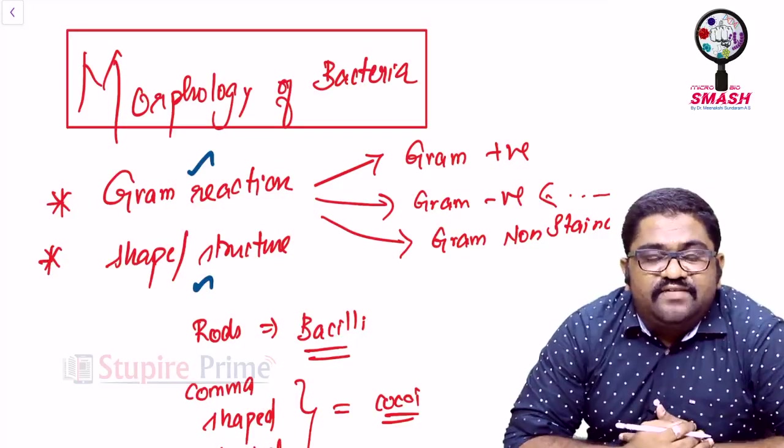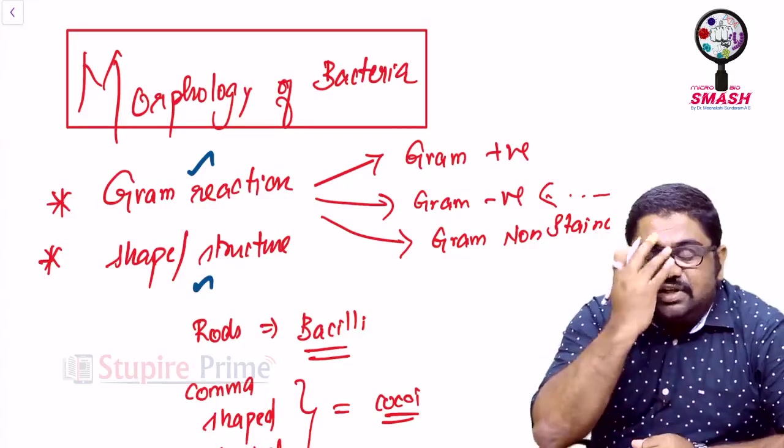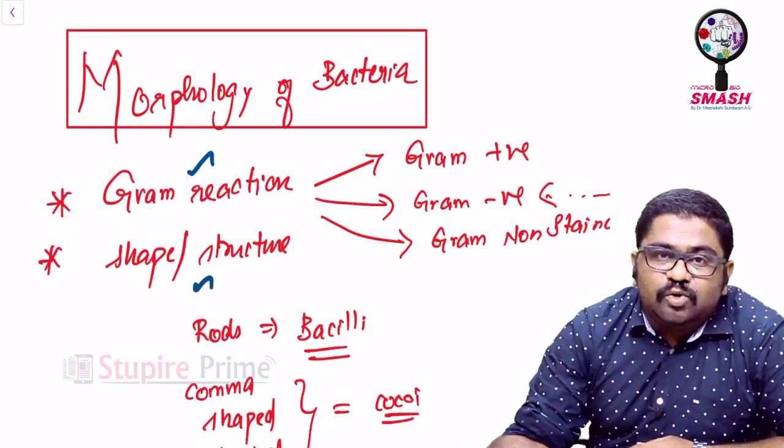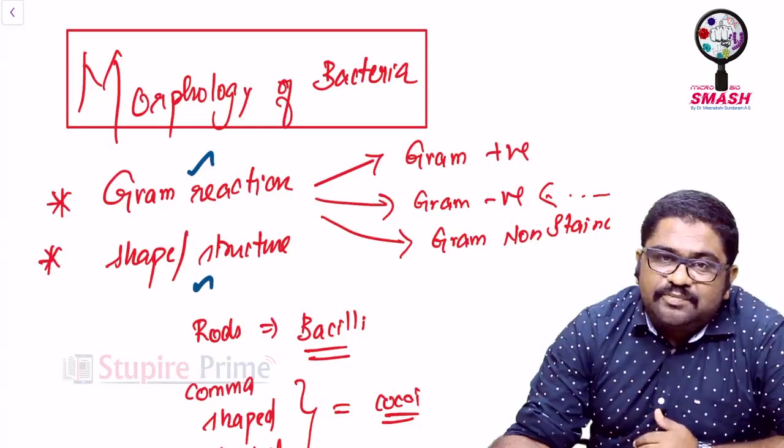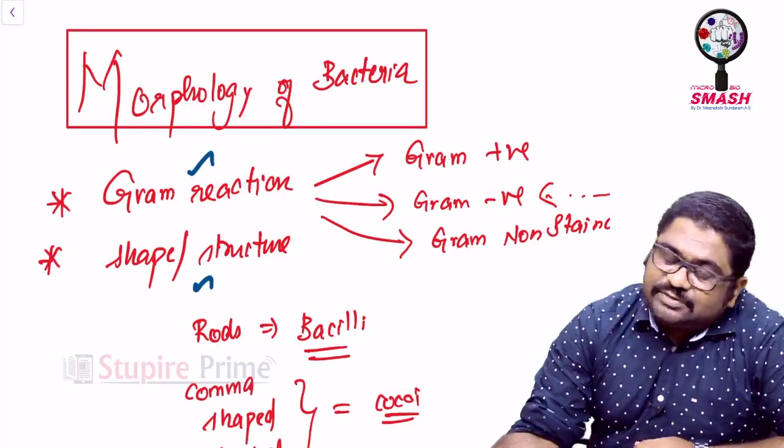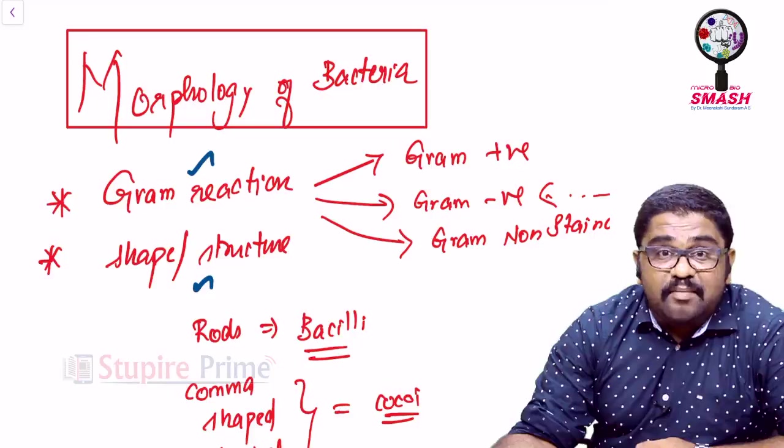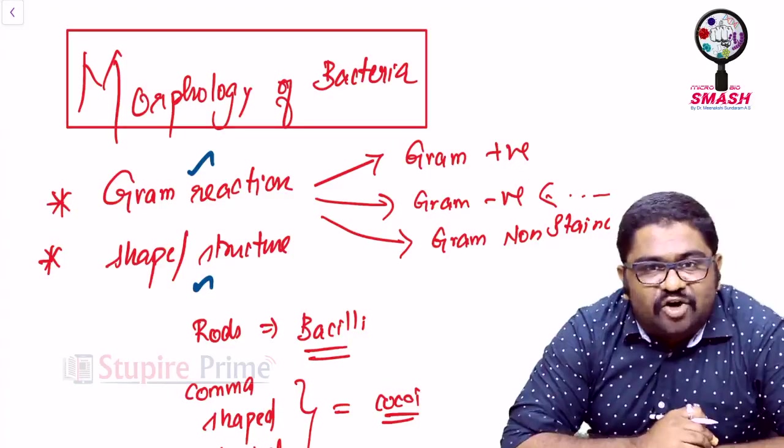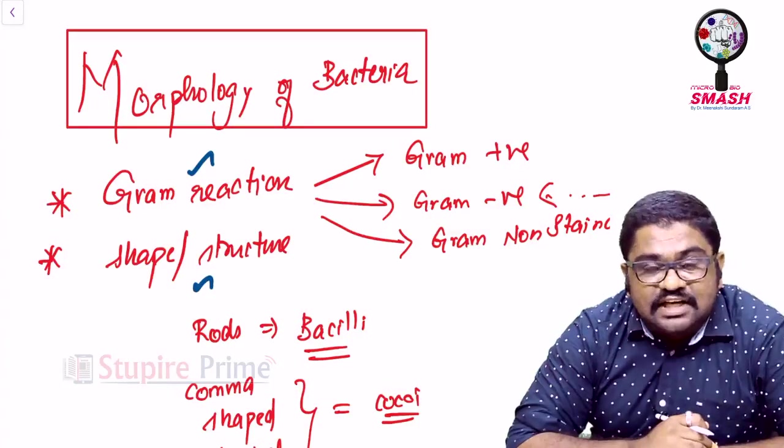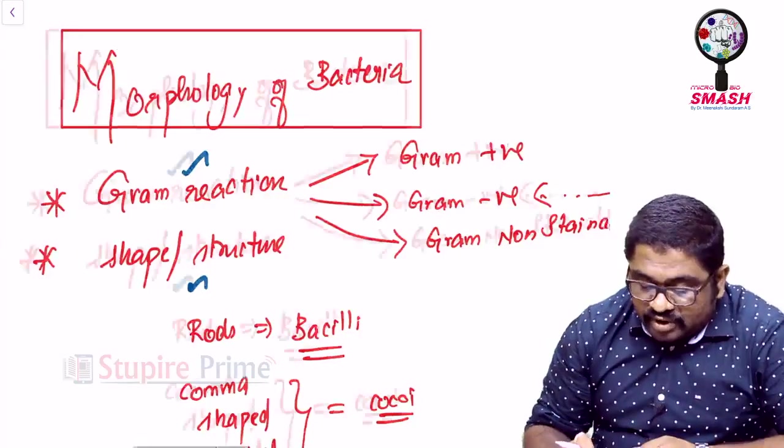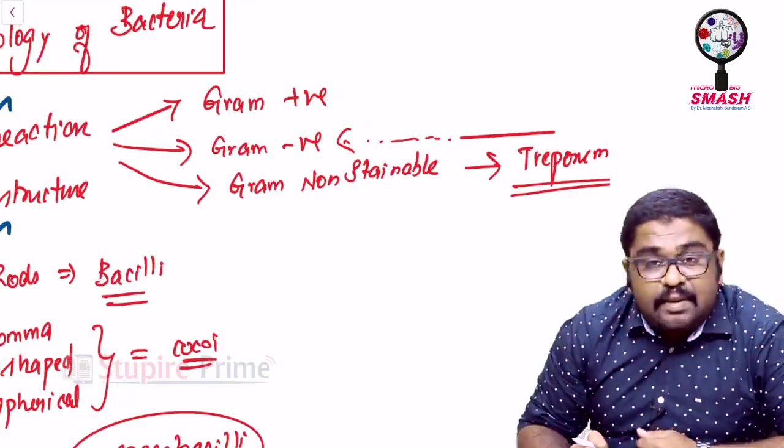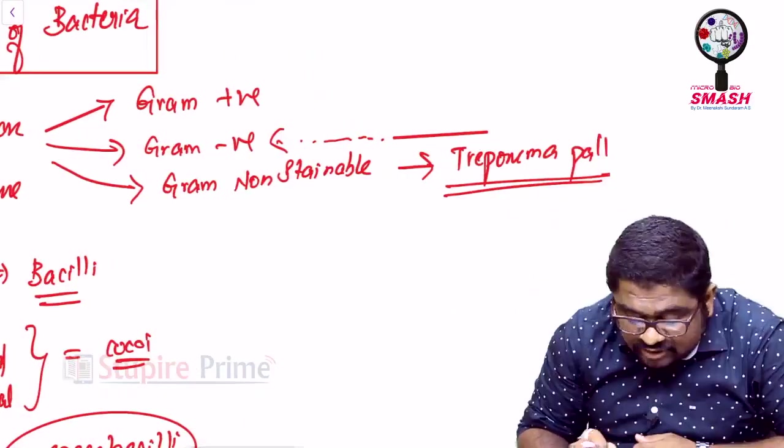Generally, if I ask you, if an organism is not gram-positive, then what is it? Your first answer would be, it is gram-negative. Please remember that it is a small mistake because just because an organism is not gram-positive, it does not mean it has to be gram-negative because there are certain organisms who are not gram-stainable at all. So, you can have gram-positive organisms, gram-negative organisms and gram-non-stainable organisms.